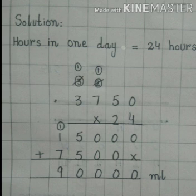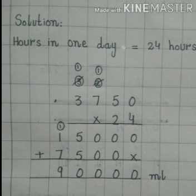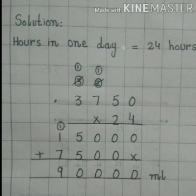Second step में 10s place पर हमारे पास 2 है, so हम 3,750 को multiply करेंगे 2 से. Second step में 1s place पर first step के नीचे cross place करेंगे और first step की carry value को cut कर देंगे. 0 × 2 = 0. 5 × 2 = 10 — write 0 नीचे, 1 carry 100s place पर. 7 × 2 = 14, plus 1 carry = 15 — write 5 नीचे, 1 carry 1000s place पर. 3 × 2 = 6, plus 1 carry = 7 — write 7. So second step result: 7,500.